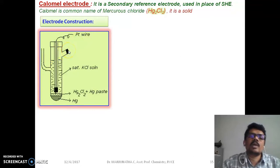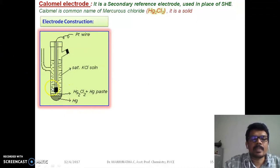This glass tube is having mercury liquid mercury metal in the bottom, above that mercury chloride and mercury paste is placed, and above that we have saturated potassium chloride solution. A platinum wire is placed which is in contact with mercury and mercury chloride for external contact.